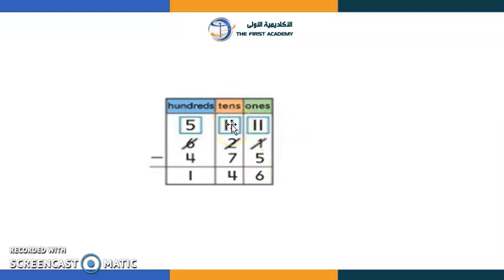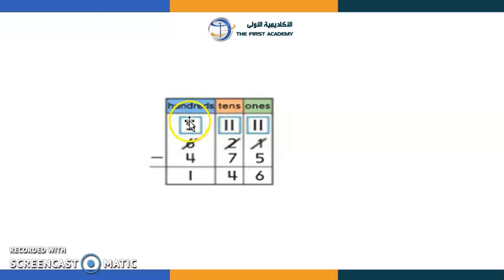When we crossed number two, it became one. Since we still couldn't subtract — more on the floor — we borrowed again. After borrowing, we had number five. Remember: 'More on top, no need to stop.' Regroup whenever the number on top is smaller than the number on the bottom.